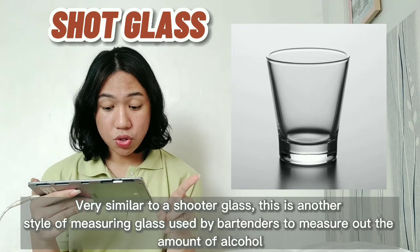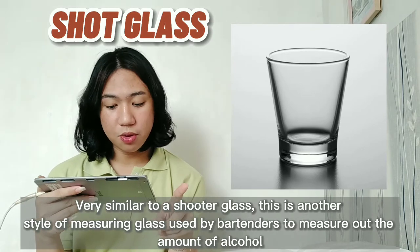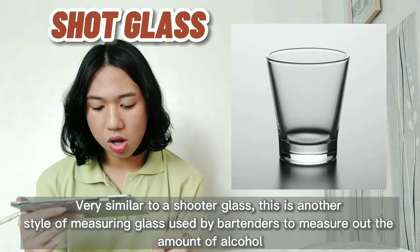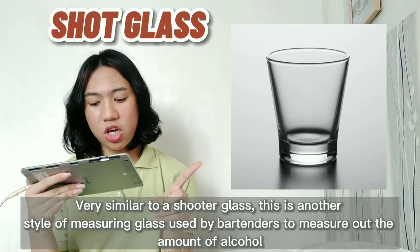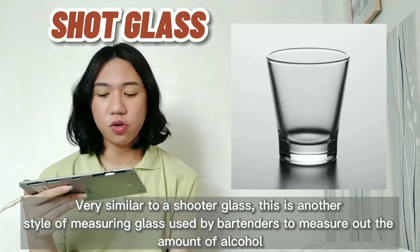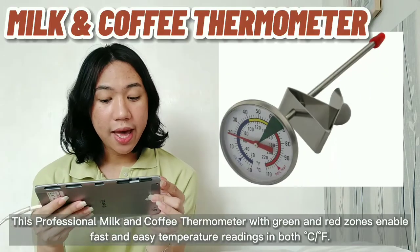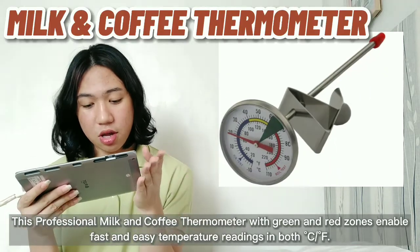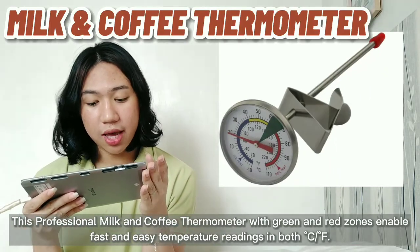The shot glass is very similar to a jigger glass and is another style of measuring glass used by bartenders to measure the amount of liquid going into each drink. Most of us already have shot glasses at home, so no substitute needed.